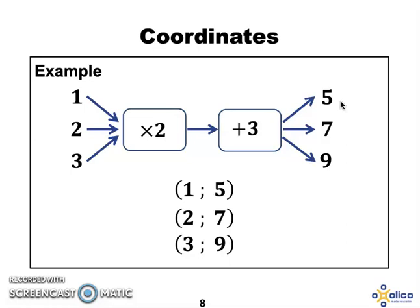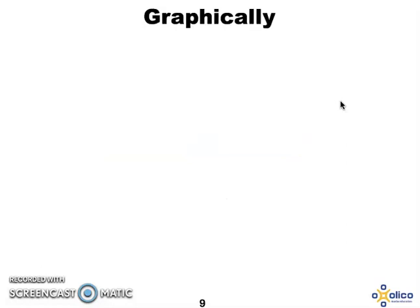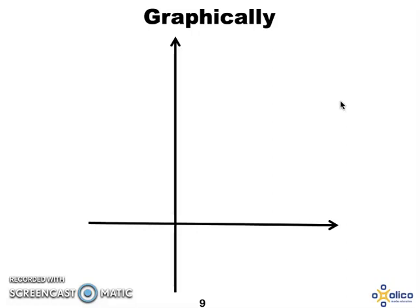We're going to use these coordinates now to represent it graphically. Representing something on a graph, we have a horizontal x-axis and a vertical y-axis. The horizontal is the x and that represents the input. The y-axis or vertical axis represents the output. Let's remove those words so that we can focus on coordinates. The coordinate 1, 5 is found by placing 1 on the x-axis because it is the input number and 5 on the y-axis because it is the output number and then finding where those two numbers meet.